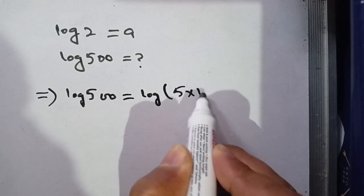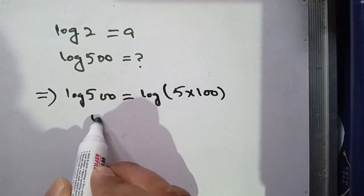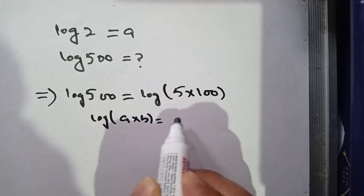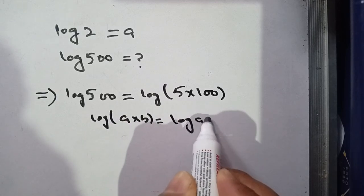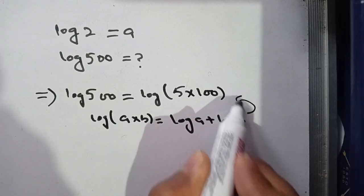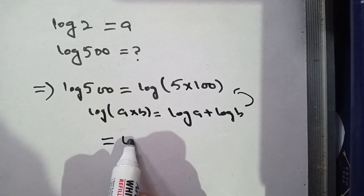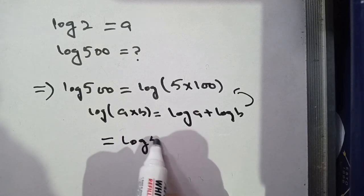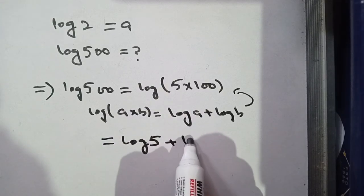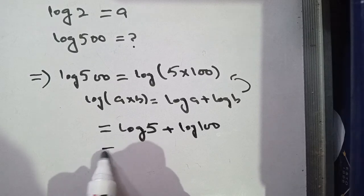We can write it as log of 5 times 100. By the logarithm property, we know that log of a times b is equal to log of a plus log of b. Using this identity on the right hand side, it will become log of 5 plus log of 100.